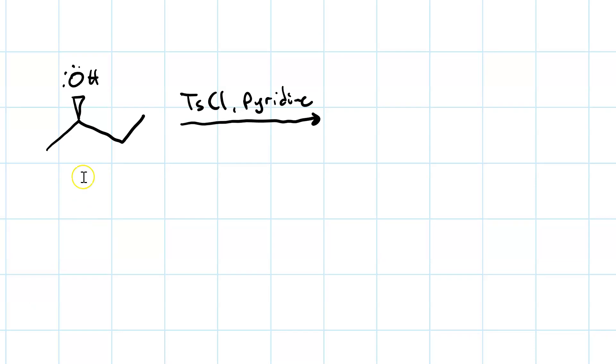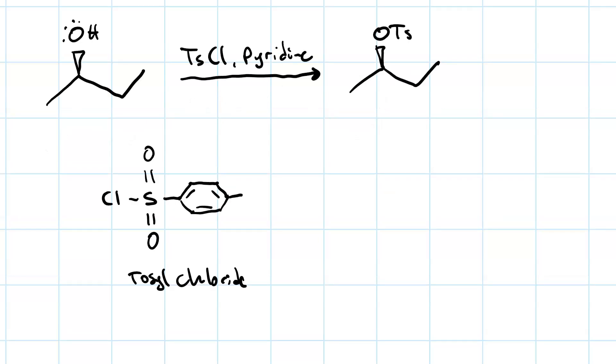To make a tosylate, for instance, I treat my alcohol with tosyl chloride in pyridine as the solvent. And voila! I now have my alkyltosylate. Mechanistically, what's going on? The TSCL actually stands for tosyl chloride. The alcohol oxygen does SN2 attack on the sulfur and the chloride leaves.